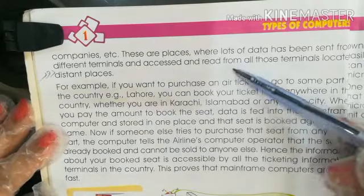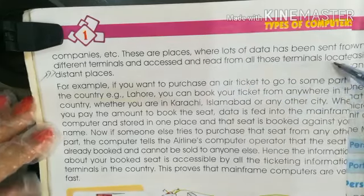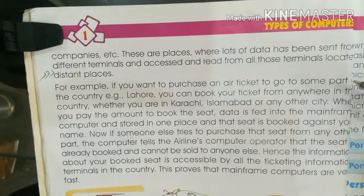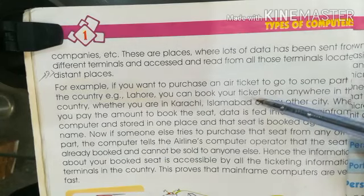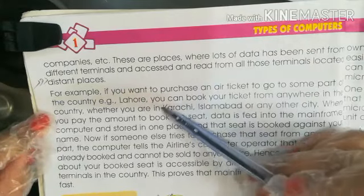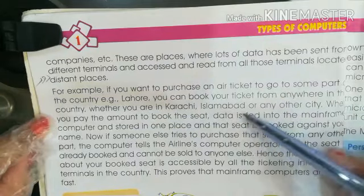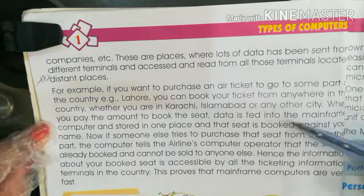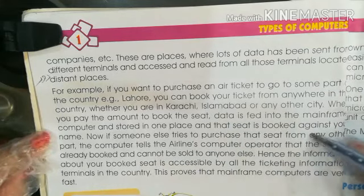These are places where lots of data has been sent from different terminals and accessed and read from all those terminals located at different places. For example, if you want to purchase an air ticket to travel to some part of the country — say Lahore — you can book your ticket from anywhere in the country, whether you are in Karachi, Islamabad, or any other city. When you pay and book the seat, the data is fed into the mainframe computer and stored in one place, and that seat is booked against your name.